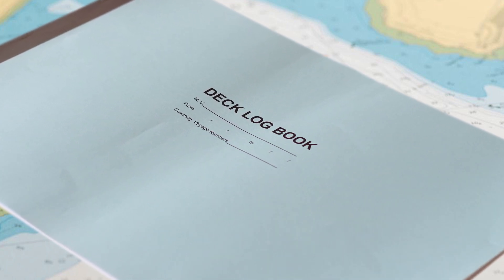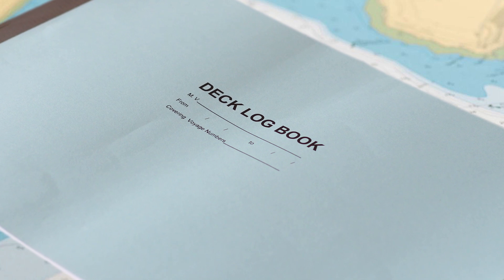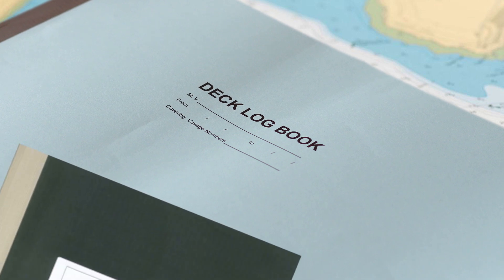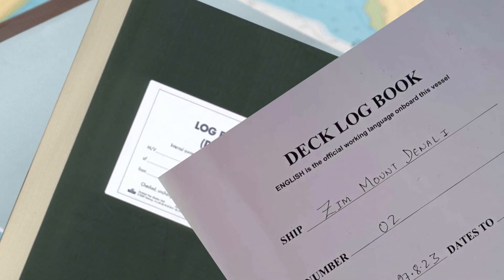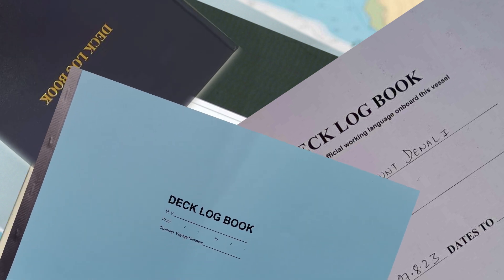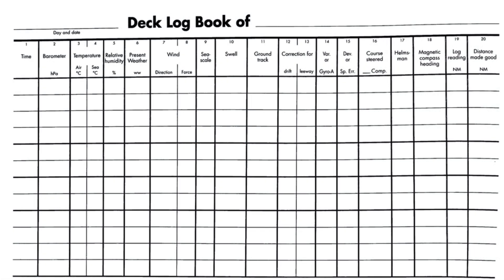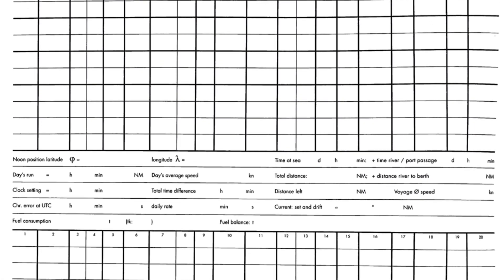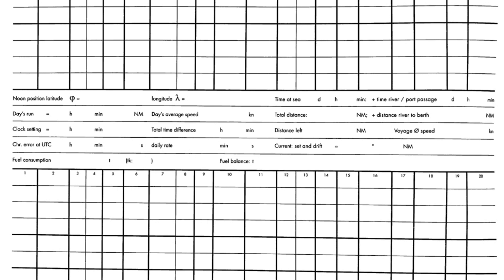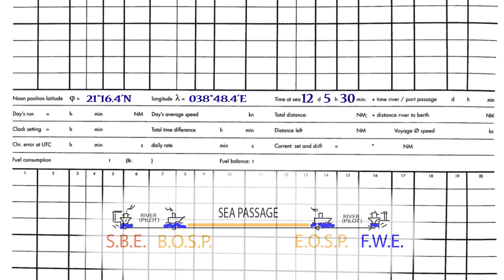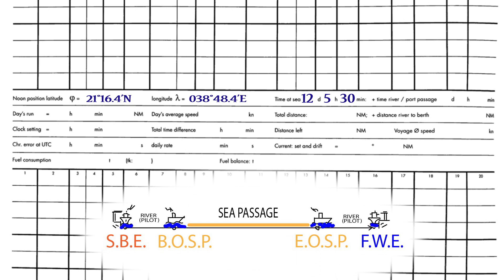Welcome to part 2. Let's see how to fill in the noon information in the deck log book. The noon information is usually filled in by the second officer and is as follows: position of the ship at noon — latitude and longitude; time at sea, which is the time calculated from the beginning of sea passage to noon.